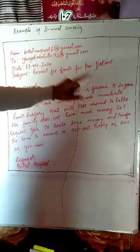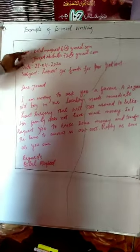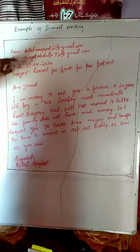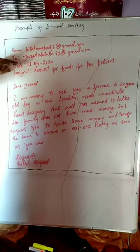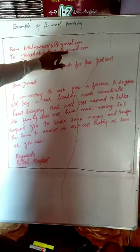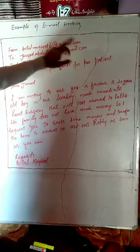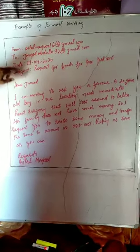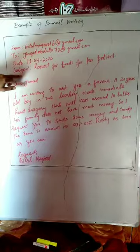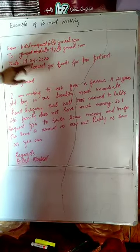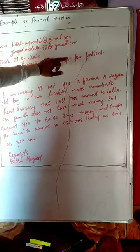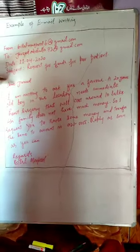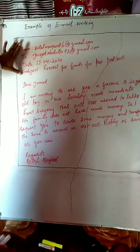I am writing an email to my friend. The sender's email ID is bilalmakbool6@gmail.com. After that, the receiver's address — to whom I am sending — is jayadumdulillah72@gmail.com. After that, the date, and then the subject: 'Request for funds for poor patients.' These are the four parts of the header.